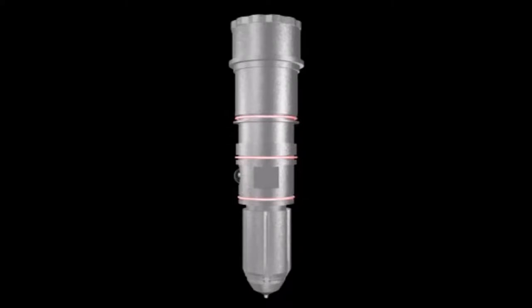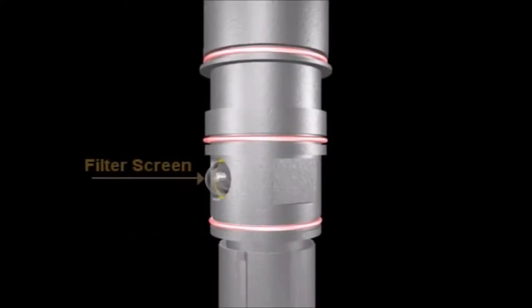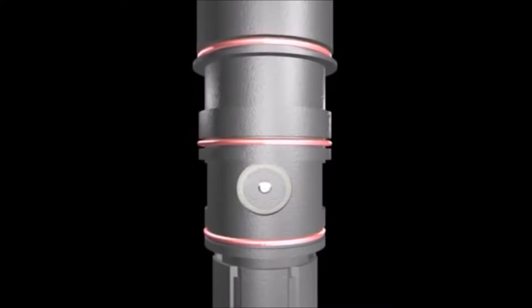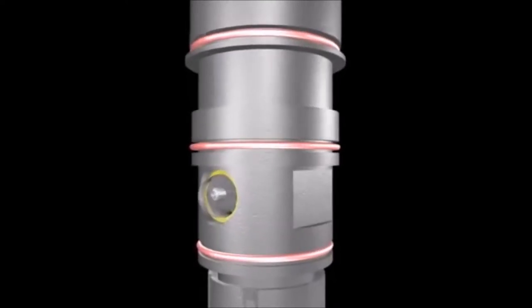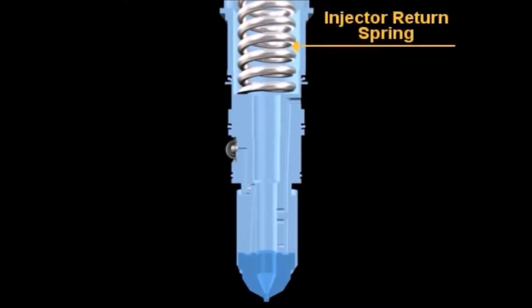The main components of the PTD top stop injector include filter screen, adjustable orifice, o-rings, injector cup, and injector return spring.